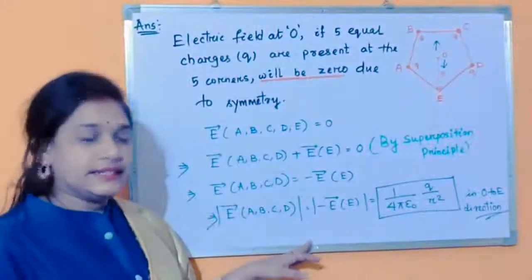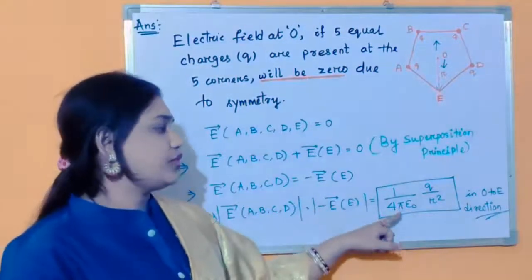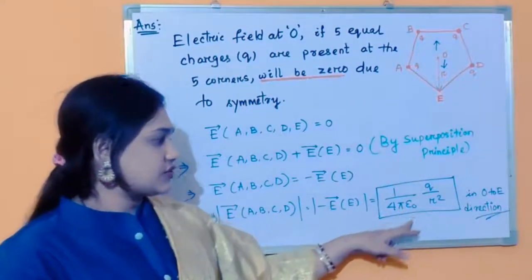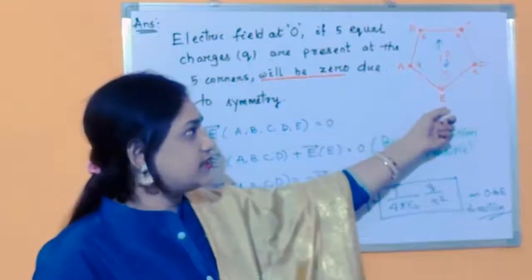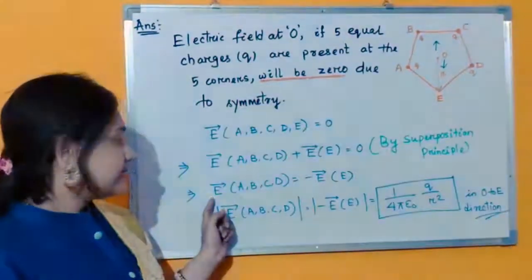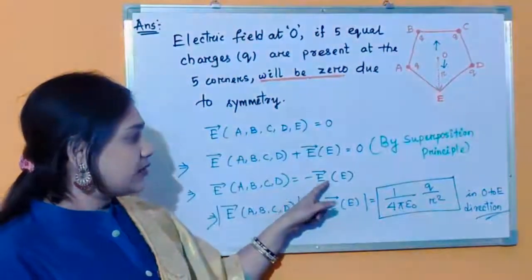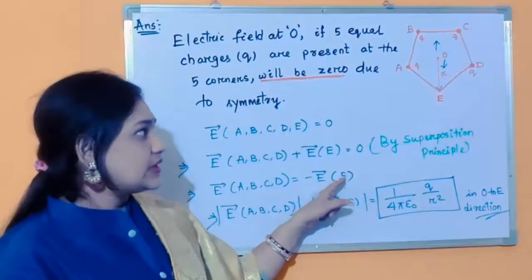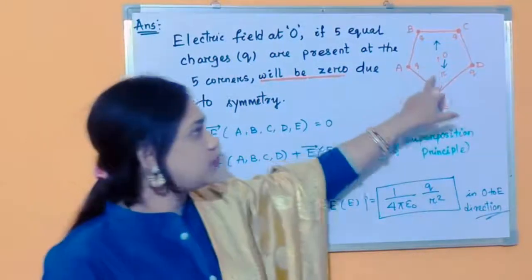Now we will consider the direction. Electric field at O due to E is given by 1 by 4π epsilon 0 Q by R squared and it is in the upward direction. Because Q is positive here, and electric field at O due to A, B, C, D is given by the negative of electric field at O due to E.